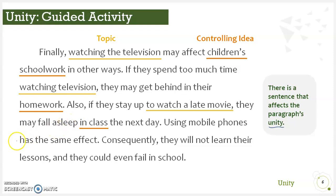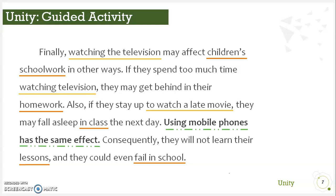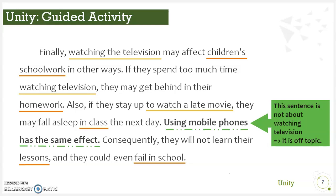'Using mobile phones has the same effect.' Notice here that we do not have any idea related to the topic — the topic is about TV while this sentence is about using mobile phones. Finally, the concluding sentence: 'Consequently, they will not learn their lessons and they could even fail in school.' We have ideas related to the controlling idea here. Therefore, the sentence about mobile phones is the one not related to the main idea — and this is the sentence that affects the paragraph's unity. This sentence is not about watching TV; therefore, it is off topic.